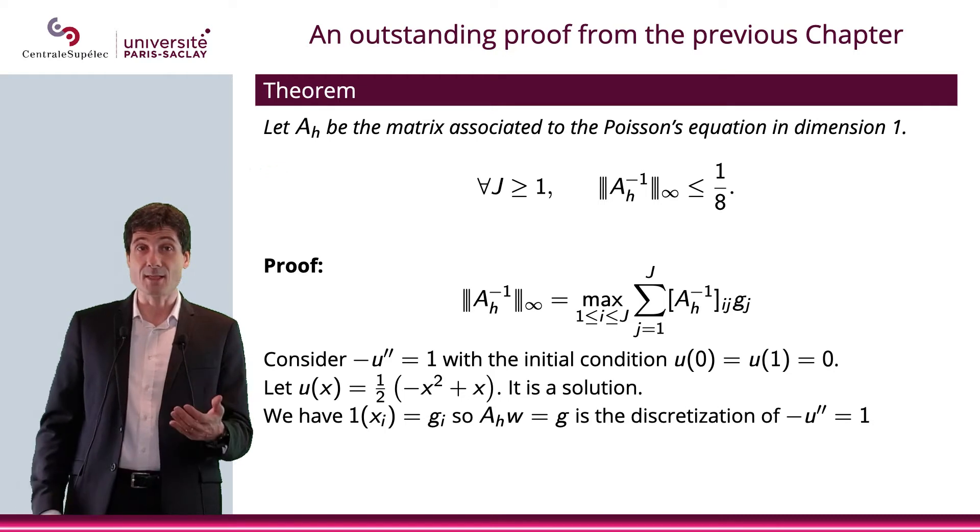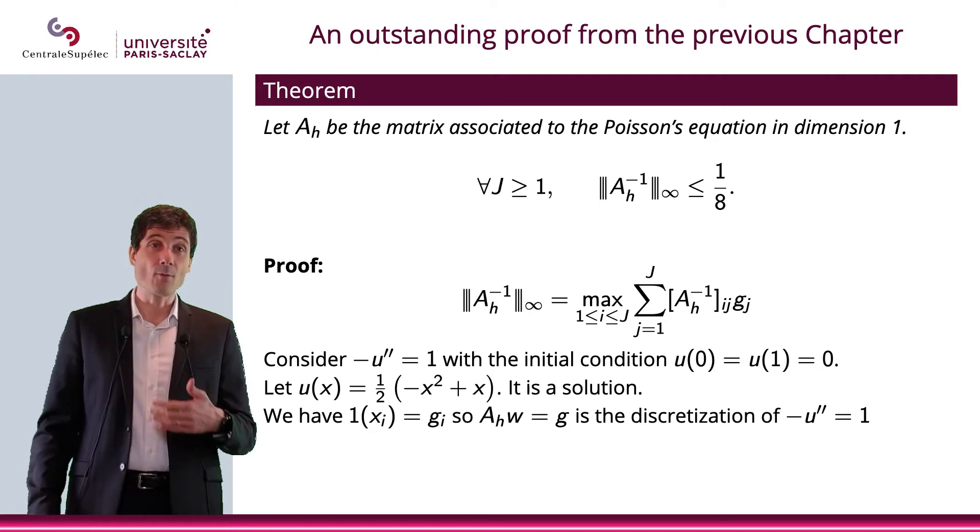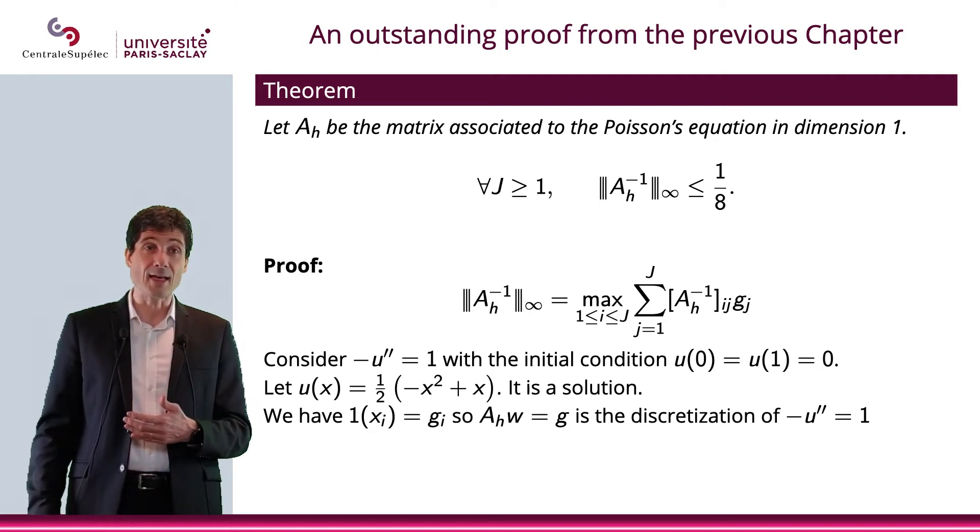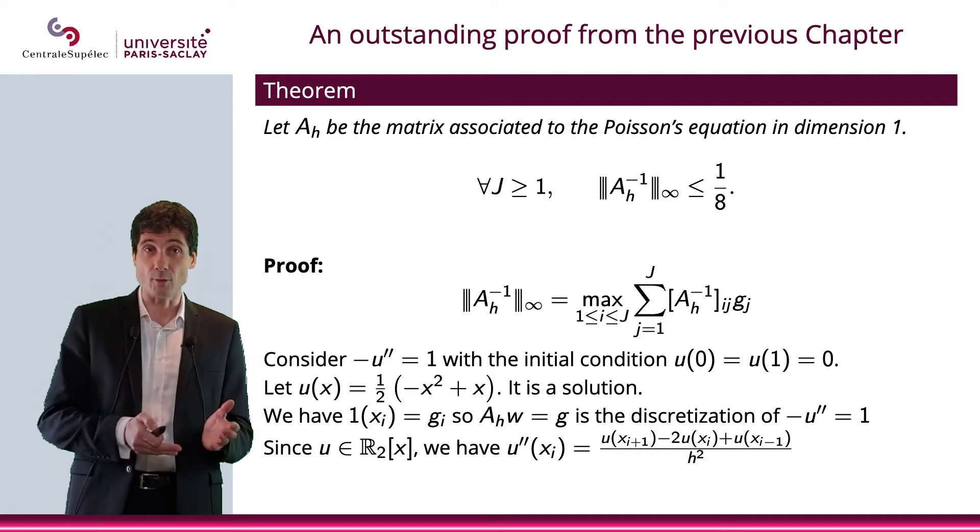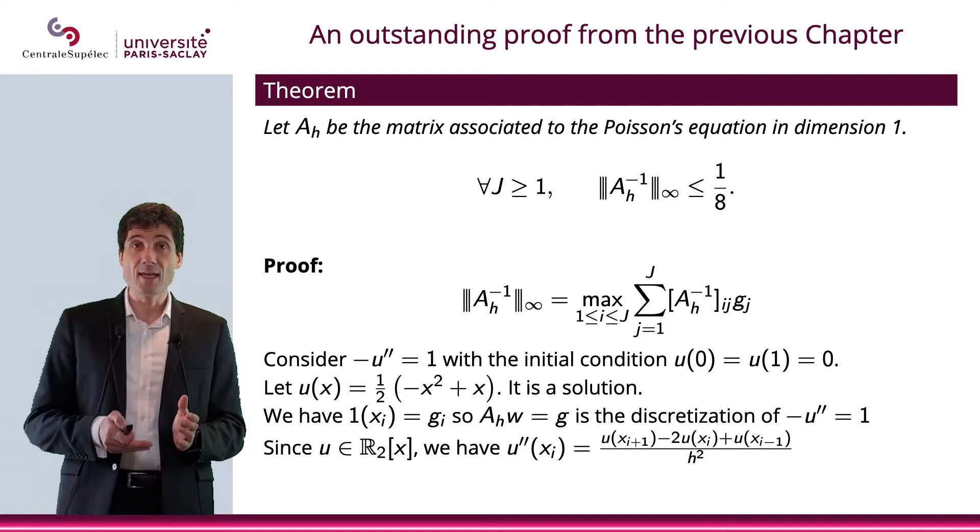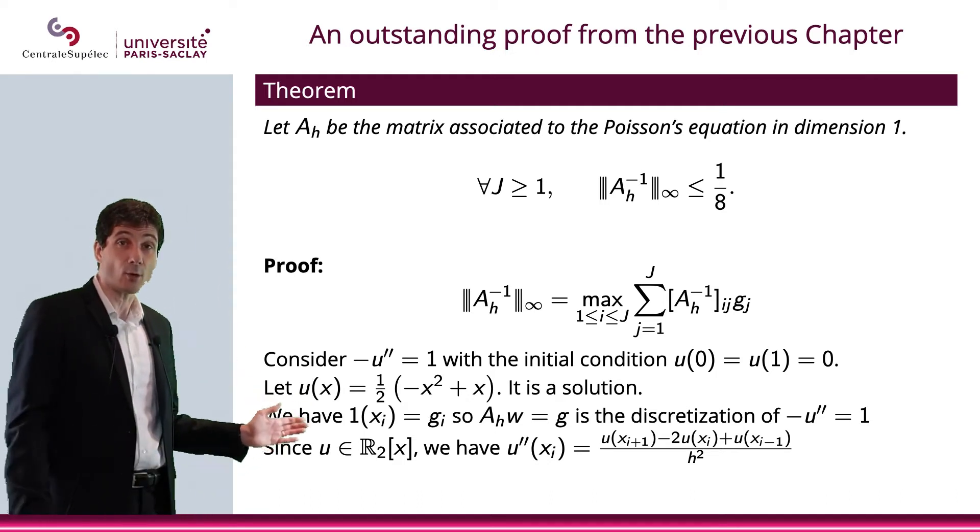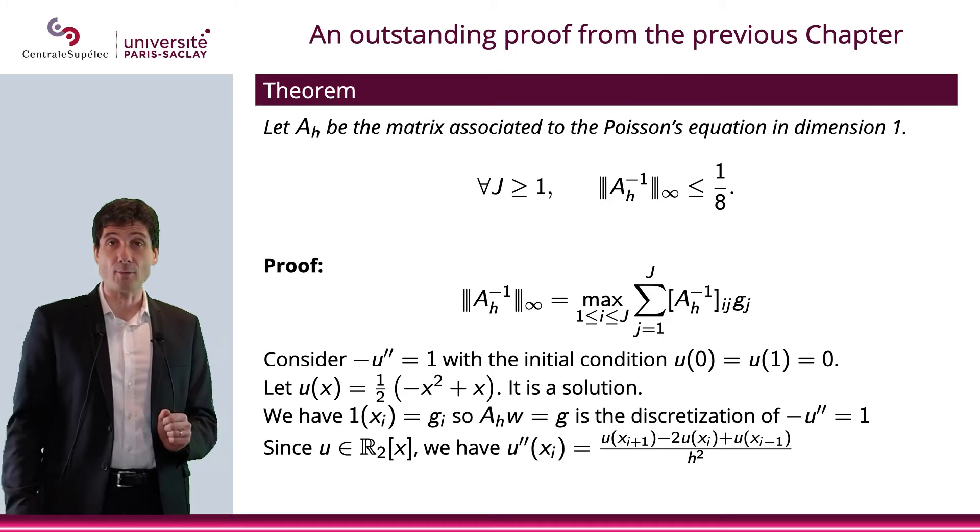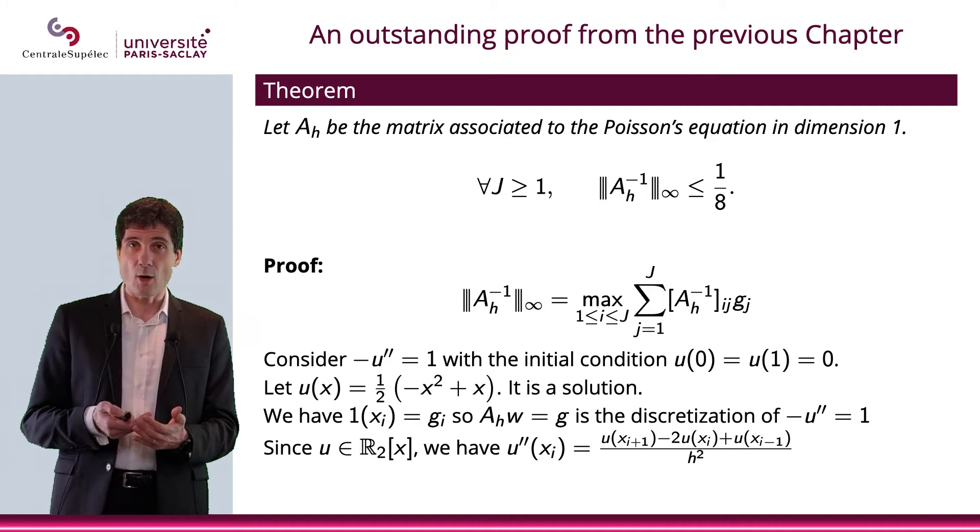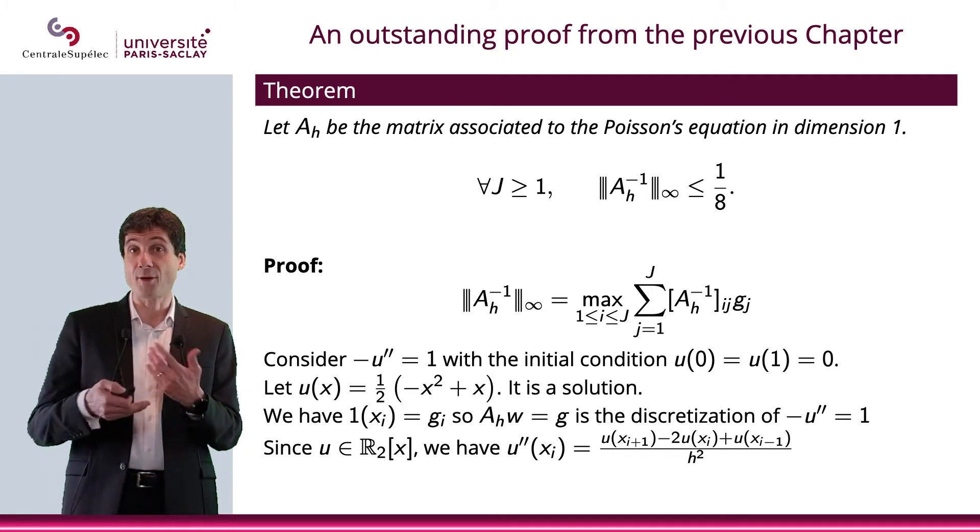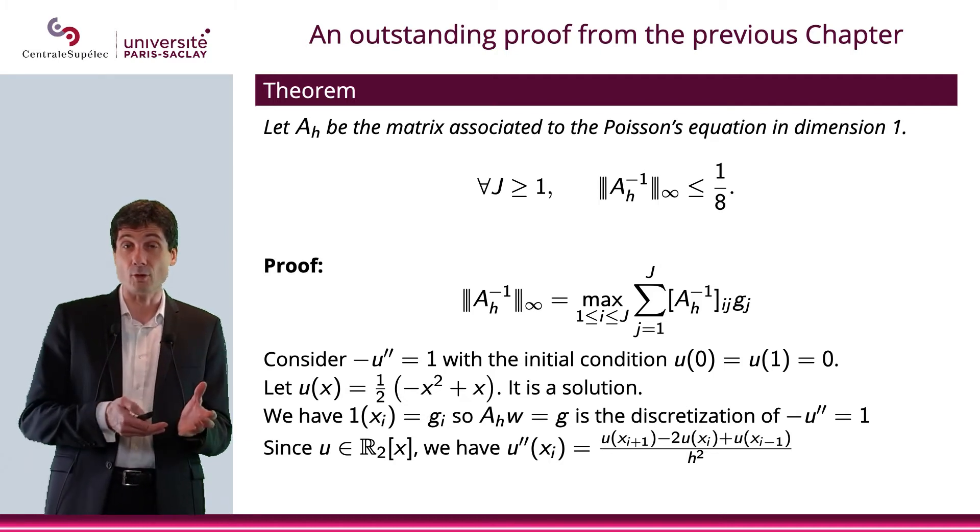Now, what I'm saying is that since u is a second-degree polynomial, then the finite difference for the second derivative will actually be equal to that formula. And if you remember, when we used the Taylor expansion, we actually saw that we have a fourth derivative that shows up.